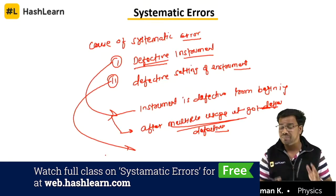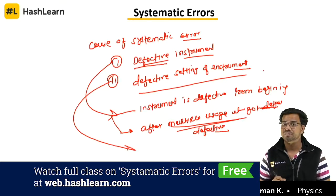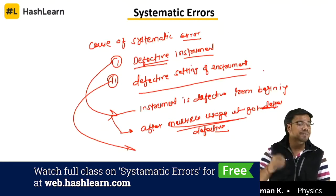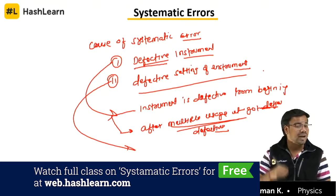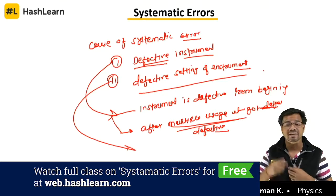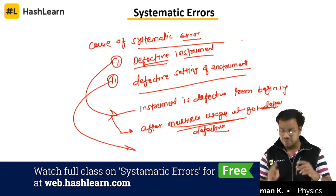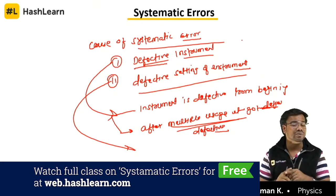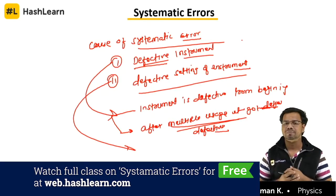Are you getting the point about defective setting of instrument? Because of others you got error. Then what you have to do? You just have to check the readings from another ammeter also. If there is another ammeter in the lab, take the reading from that other instrument too. In this way you can eliminate or reduce the systematic error.